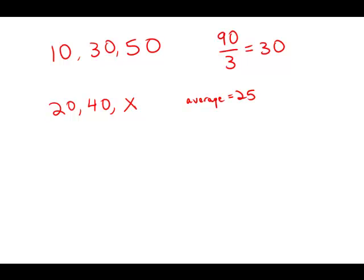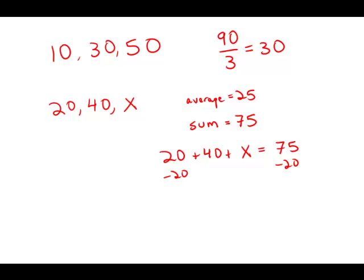They have an average of 25. There's three of them, which means they must have added up to a sum of 75. So 20 plus 40 plus X equals 75. Subtract 20 from both sides: 40 plus X equals 55. Subtract 40 from both sides, and we get X equals 15.